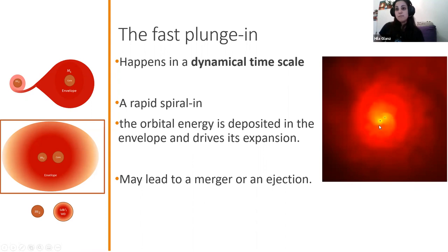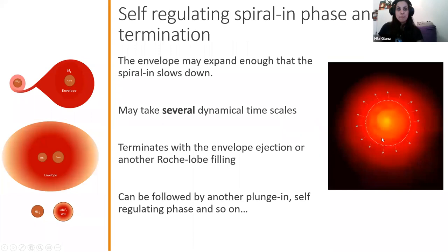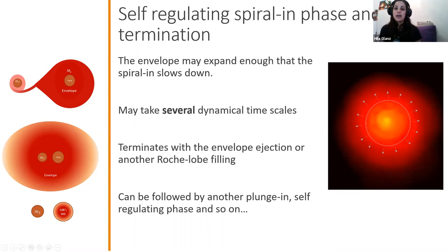Afterwards, if the envelope has not yet been ejected, there may be another longer phase — the self-regulating phase — in which due to dissipation and dynamical friction the spiraling motion may slow down enough to synchronize. Then after a few dynamical timescales the common envelope process may happen all over again, or there will be other important processes during this stage that drive the envelope outwards until finally the whole envelope is ejected from the system.